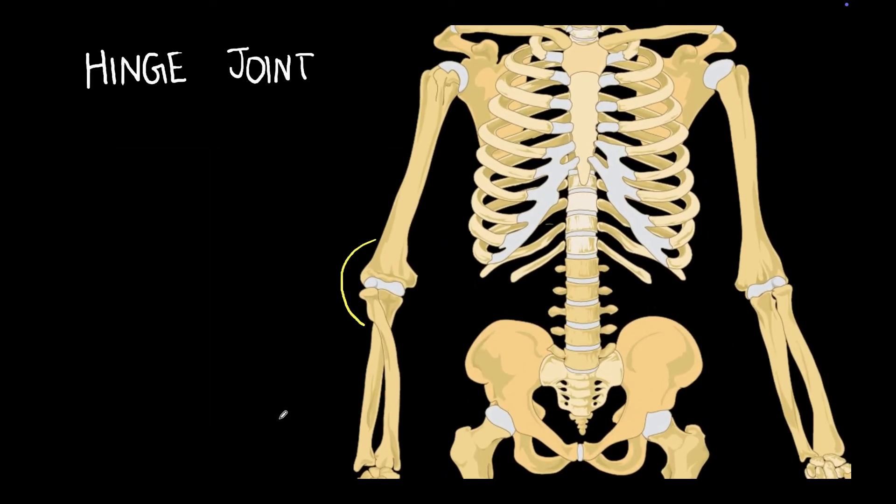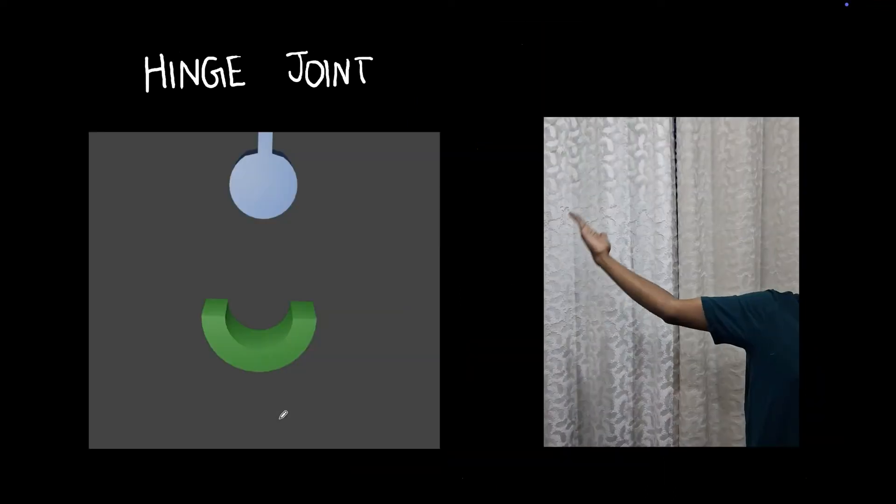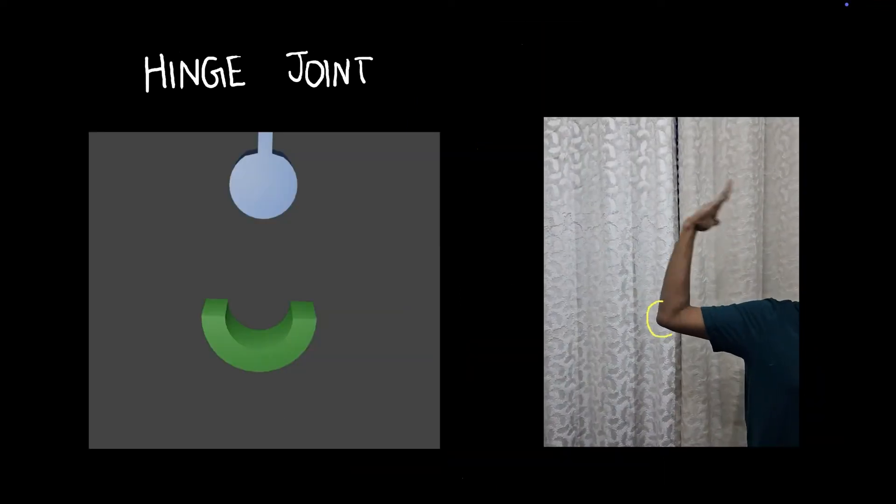At the elbow, we have such an example. Let's see this in action. Look at this arm. At this point, there's a hinge joint.